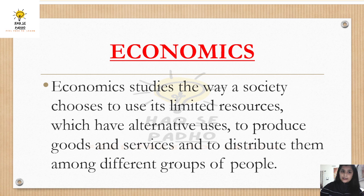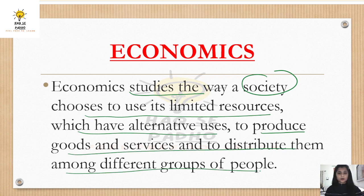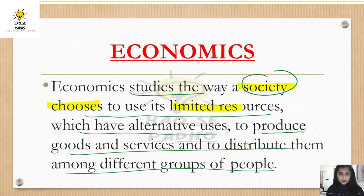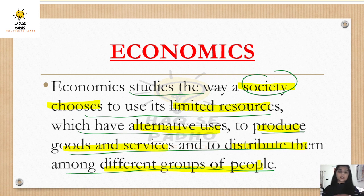What is the definition of basic economics? Economics studies the way our society chooses to use its limited resources, which have alternative uses, to produce goods and services and to distribute them amongst different groups of people. The key words here are: society, choose, limited resources, alternative uses, produce goods and services, and distribute them to different groups of people. That is what economics is the study of.